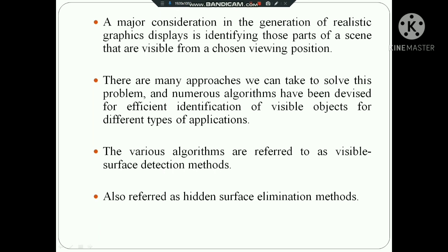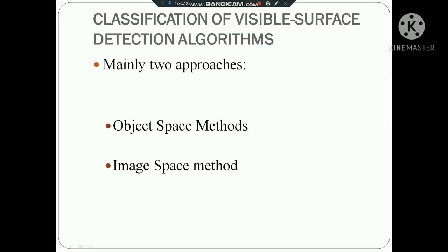Let's talk about Visible Surface Detection Algorithms. We will distinguish between two phases. The main two categories are: one is object space and the other is image space. These are the classifications of visible surface detection algorithms. Object space and image space — you have to write these two.